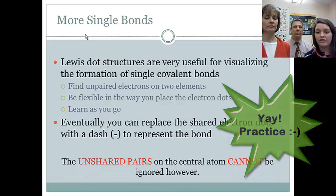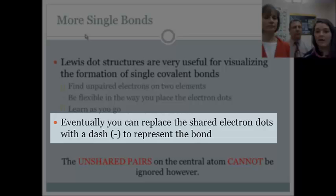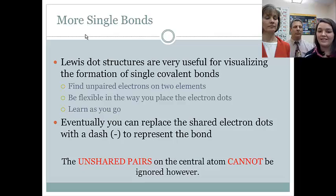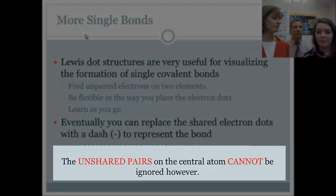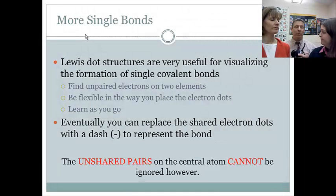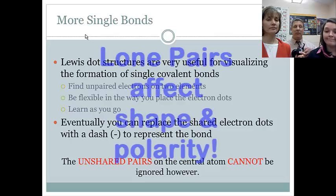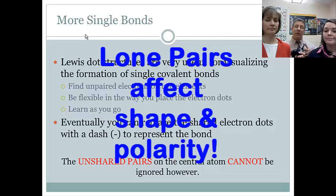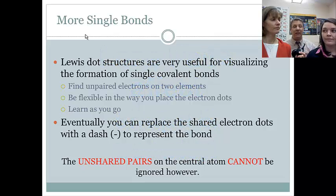And eventually, you're going to replace those shared electron dots, so that pair of shared electrons, with a dash, and that's going to represent our bond. And we can't ignore any of those unshared pairs or those lone pairs on the central atom. They become really important later when we're talking about the overall shape of the molecule and the polarity of that molecule, which is affected by its shape.